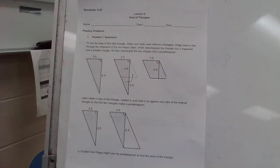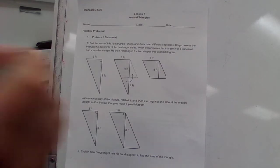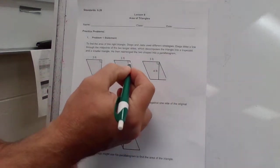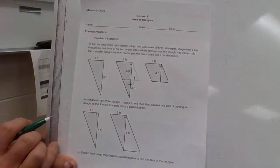Diego drew a line through the midpoints of the two longer sides. This is what they're talking about right here, at the midpoints. The two longer sides, which decomposes the triangle into a trapezoid and a smaller triangle.